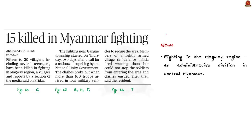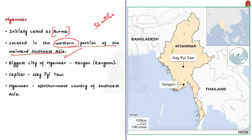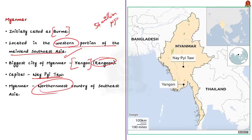This article reports about fighting in the Magwe region of Myanmar, which is in central Myanmar. In this context, let us quickly refresh our learning on the region of Myanmar. Myanmar was initially called Burma and is located in the western portion of mainland Southeast Asia. It is a very population-dense country with a population of about 54 million. The biggest city is Rangoon — formerly called Rangoon, now called Yangon — and its capital is Naypyidaw. Myanmar is the northernmost country of Southeast Asia and is shaped like a kite with a long tail that runs along the Malay Peninsula.